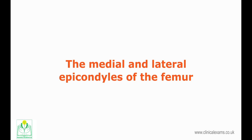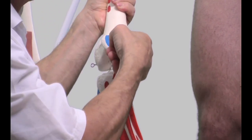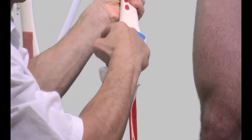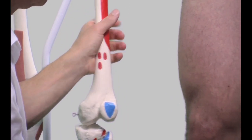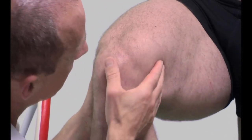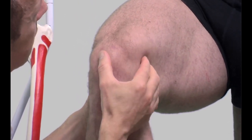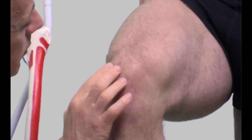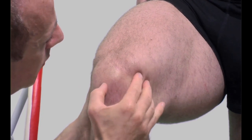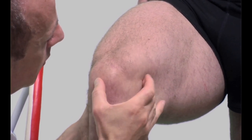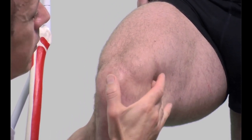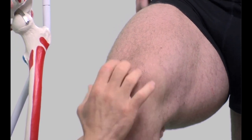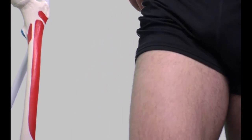The medial and lateral epicondyles of the femur are the two outermost protrusions of the medial and lateral surfaces of the condyles. The epicondyles are best palpated with the knee in flexion. Run your fingers medially and laterally from the patella. The adductor tubercle forms a slightly larger protrusion on the medial epicondyle, about 2 cm proximal to that.